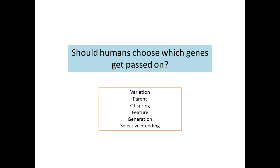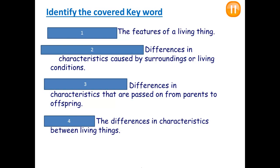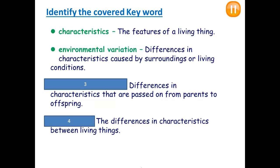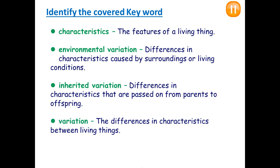Before we move on with the new content, let's refresh some keywords learned so far. Find for each statement or definition the right keyword. The features of a living thing we call a characteristic. Differences in characteristics caused by surroundings or living conditions we call environmental variation. Differences in characteristics passed on from parents to offspring we call inherited variation. Differences in characteristics between living things we call variation.